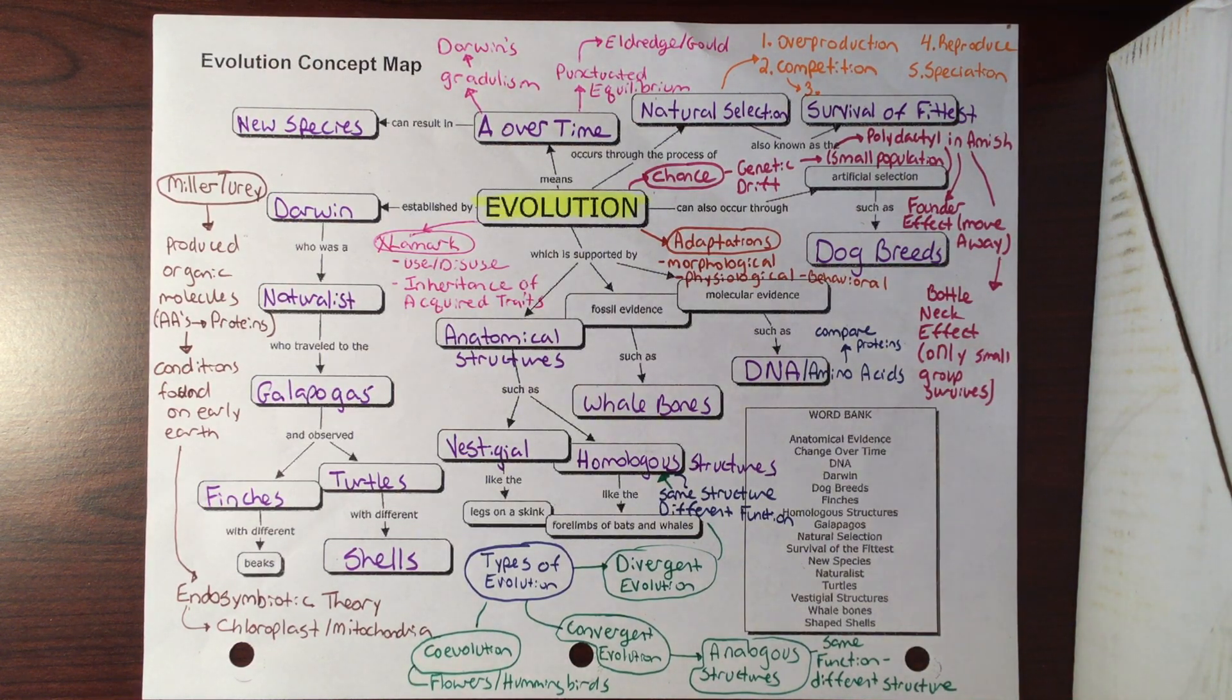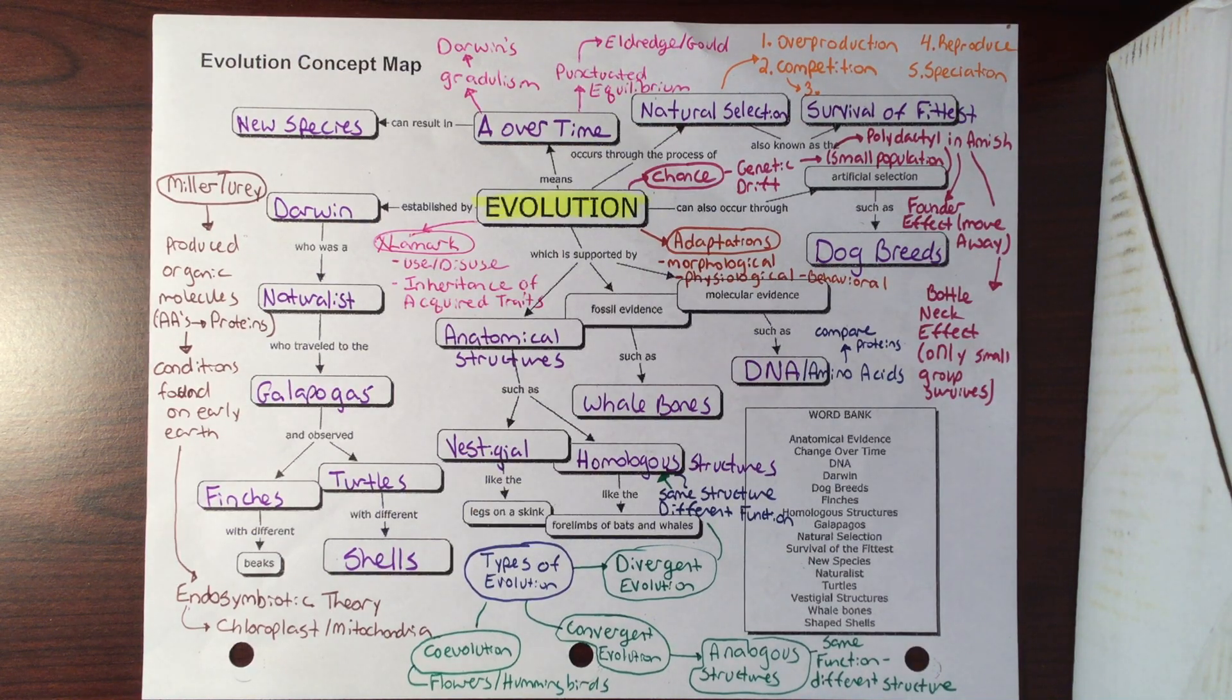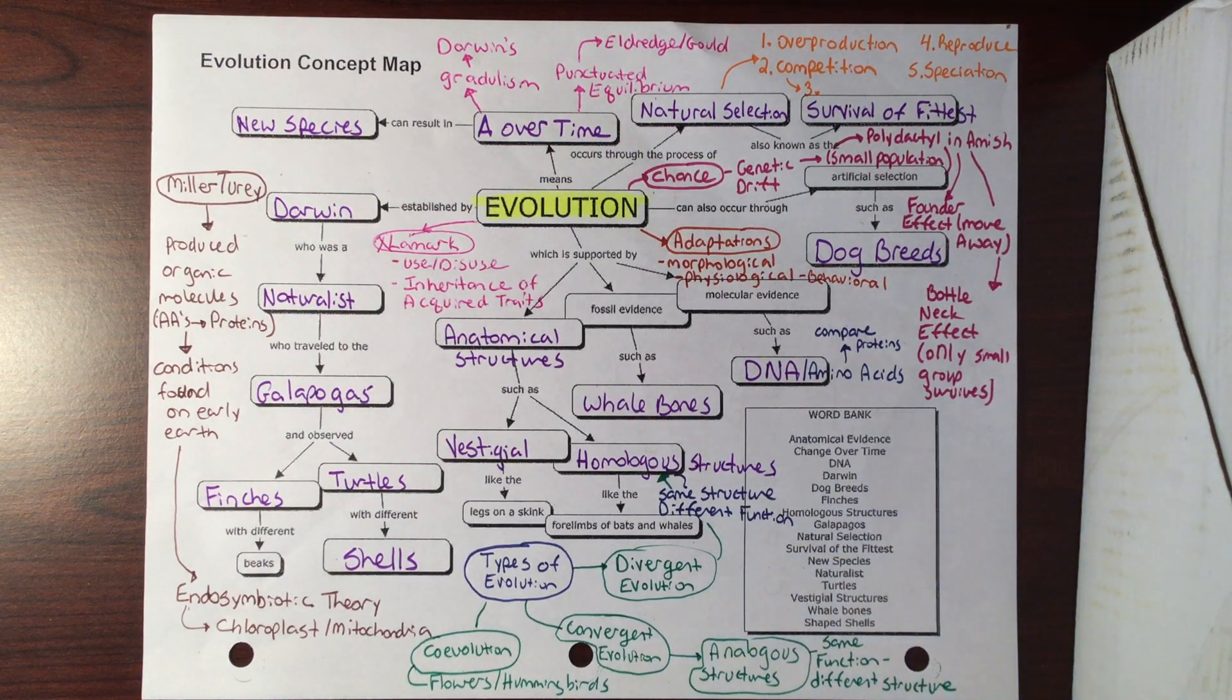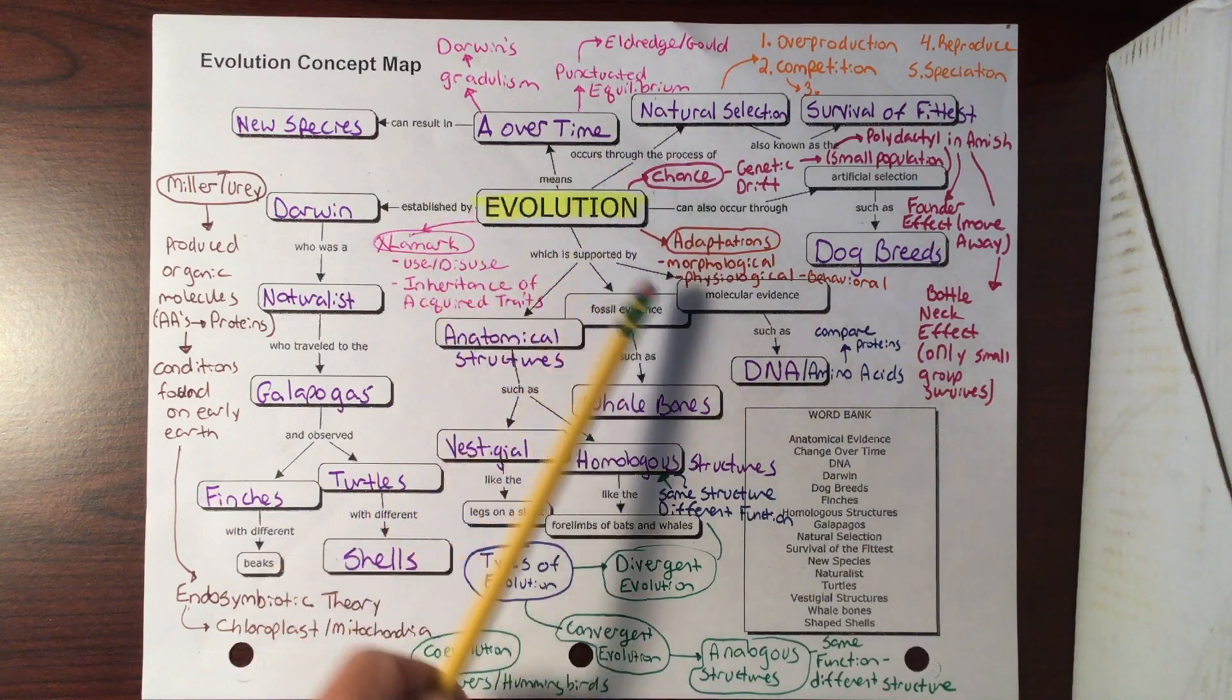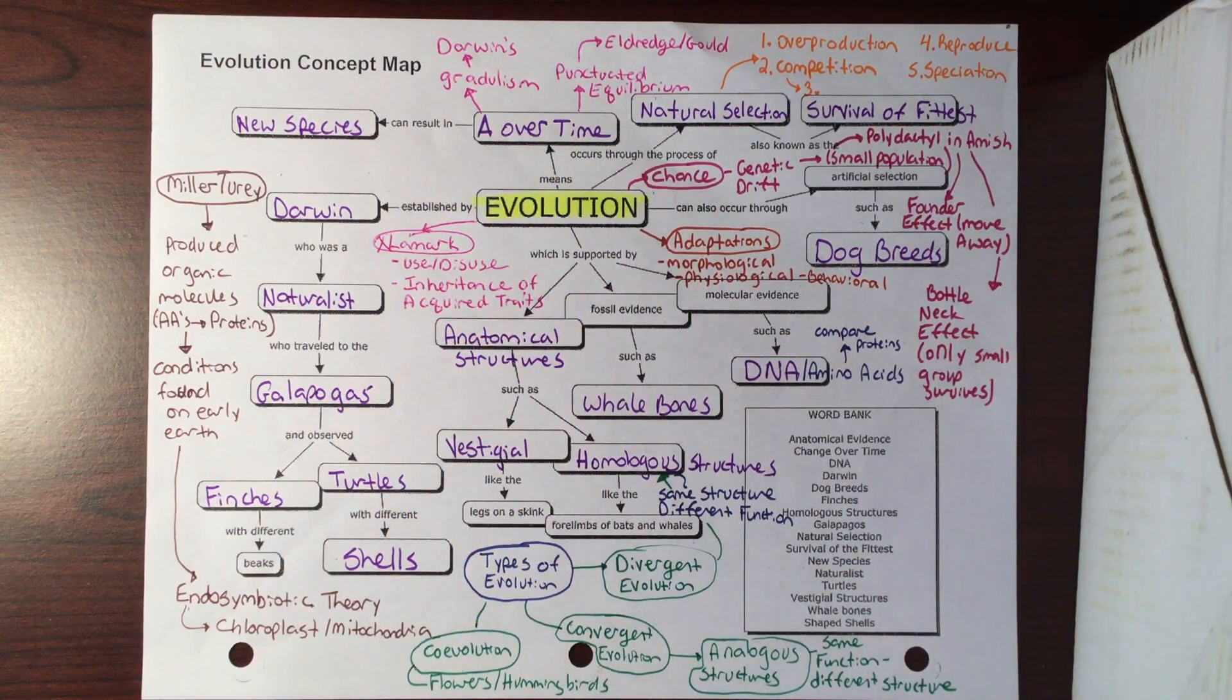With convergent evolution we're looking at analogous structures. We added a little bit to your notes, and that was co-evolution. With this idea of co-evolution, organisms evolve together. Flowers and bees, or flowers and hummingbirds. As one becomes more brightly colored, maybe one grows a little longer. Well, the hummingbird or the bee has to adapt to it so that it is able to feed off of it.